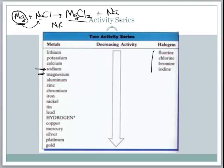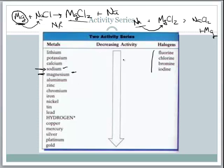On the other hand, if we write the reaction in reverse — sodium reacts with magnesium chloride to form sodium chloride and magnesium — now sodium is trying to replace the magnesium. Sodium is higher than magnesium on the chart, so this reaction would take place. That's how you use the activity series for single replacement reactions.